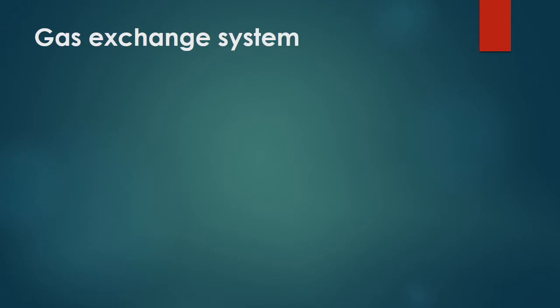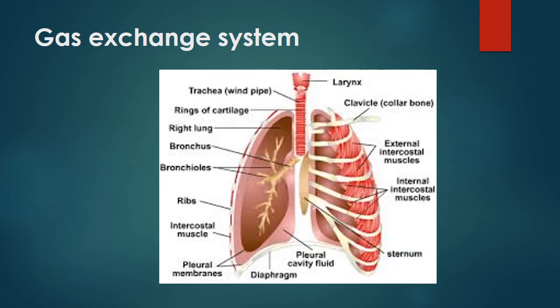Let's explore the gas exchange system, also called the respiratory system. The main organs include the lungs, trachea, bronchi, and bronchus.